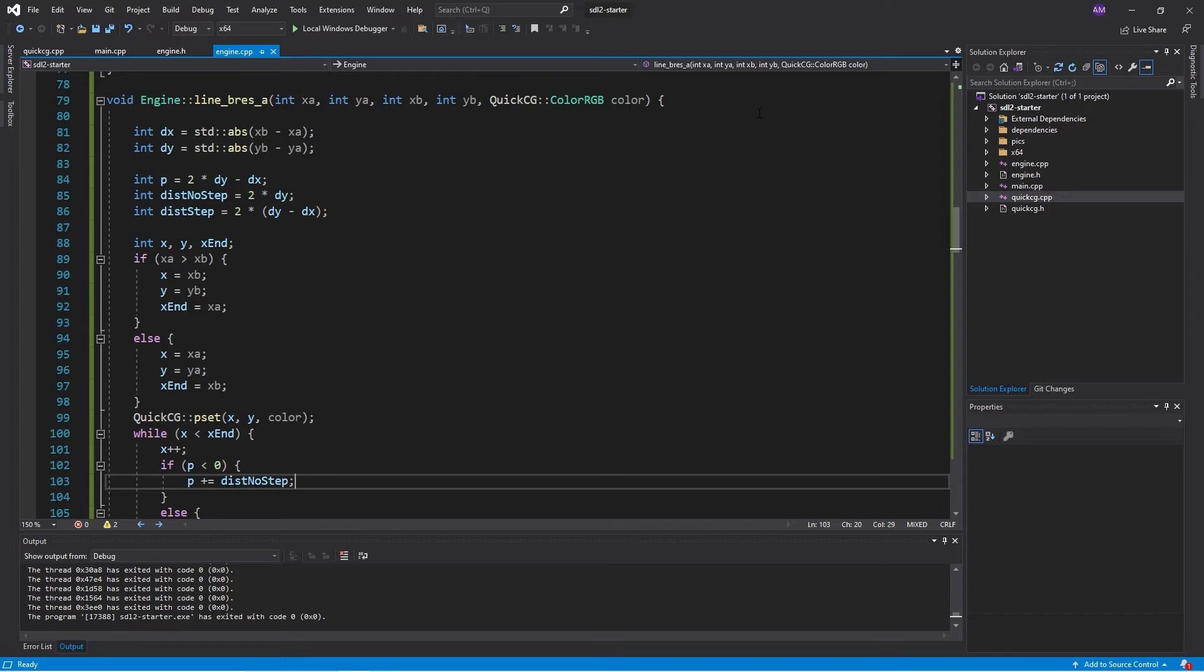We go ahead and find the separations, the dx and dy distances. We start off our decision parameter at 2 dy minus dx, and then we determine the distance if we do not step up by one and the distance if we do step up by one, as we saw in our recursion relation.